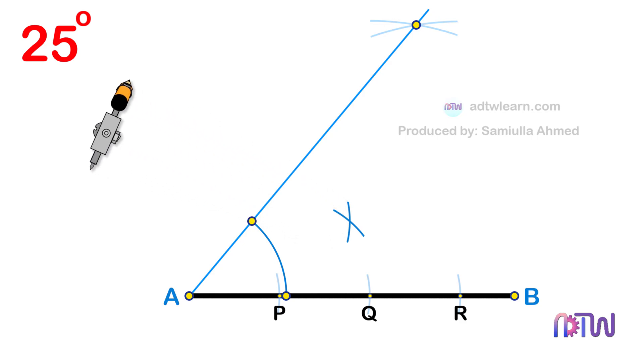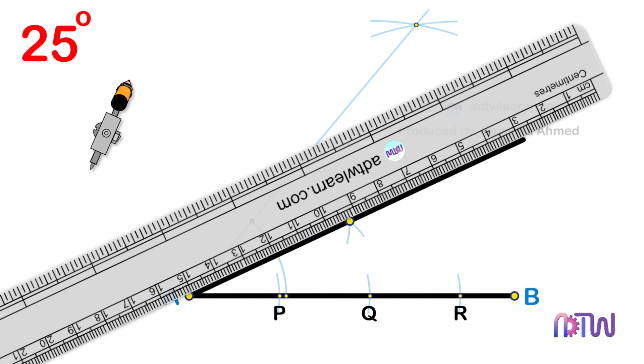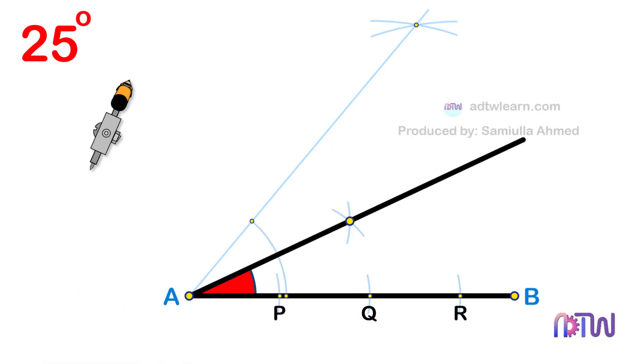Draw a line passing through this point from the endpoint A of the line segment. The angle made by this line with the horizontal is 25 degrees. You can cross-check by using the protractor.